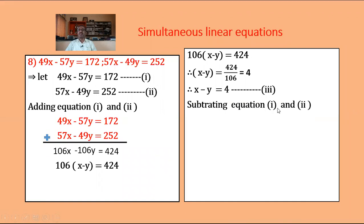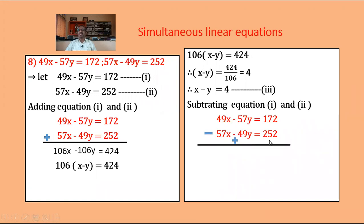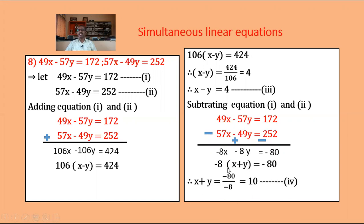Subtracting equation 2 from equation 1: 49x minus 57y equals 172, minus (57x minus 49y equals 252). Signs change: 49x minus 57x equals minus 8x, and minus 57y plus 49y equals minus 8y, and 172 minus 252 equals minus 80. Taking minus 8 common: minus 8 times (x plus y) equals minus 80. Dividing: x plus y equals 10 — equation number 4.